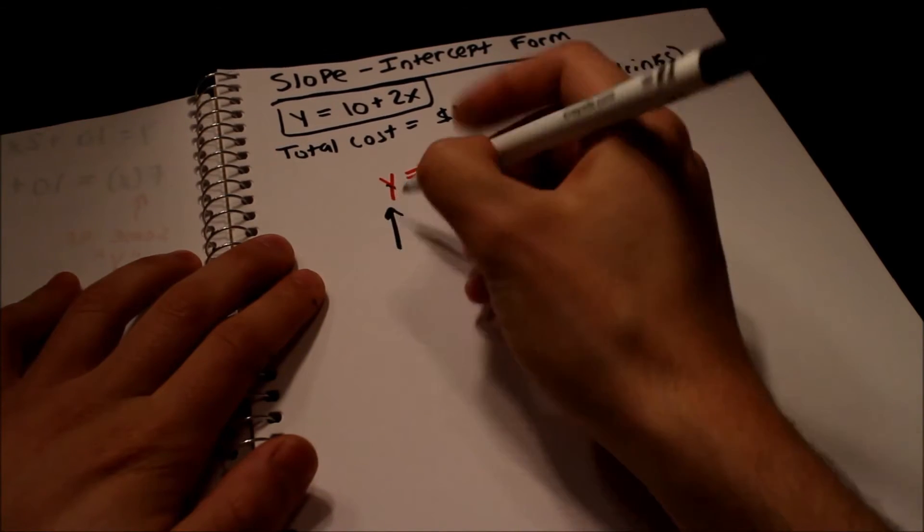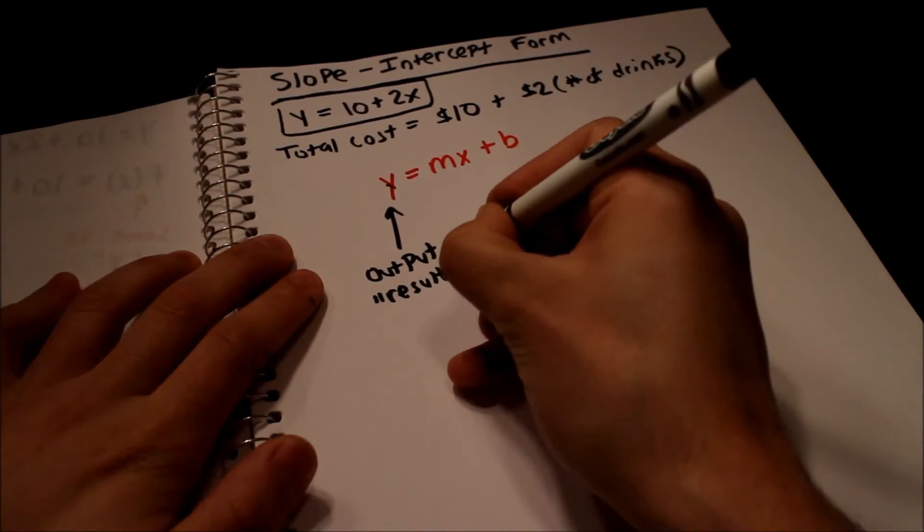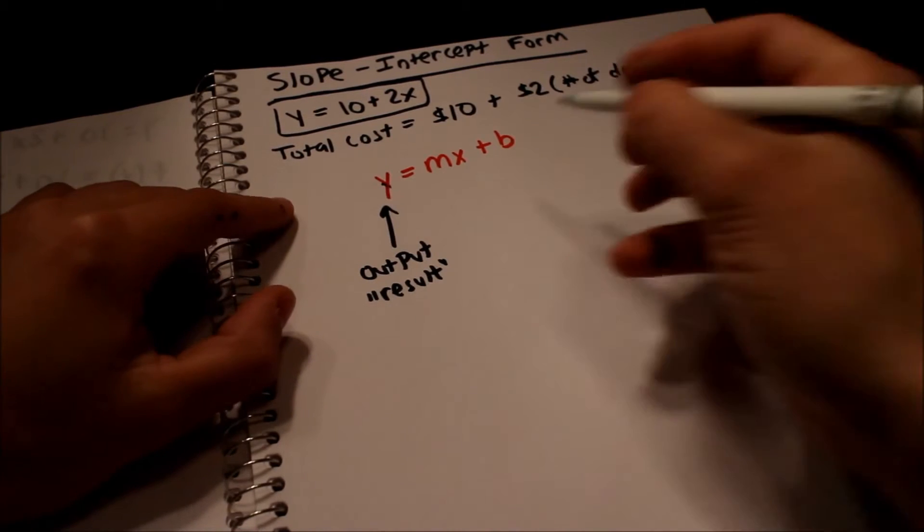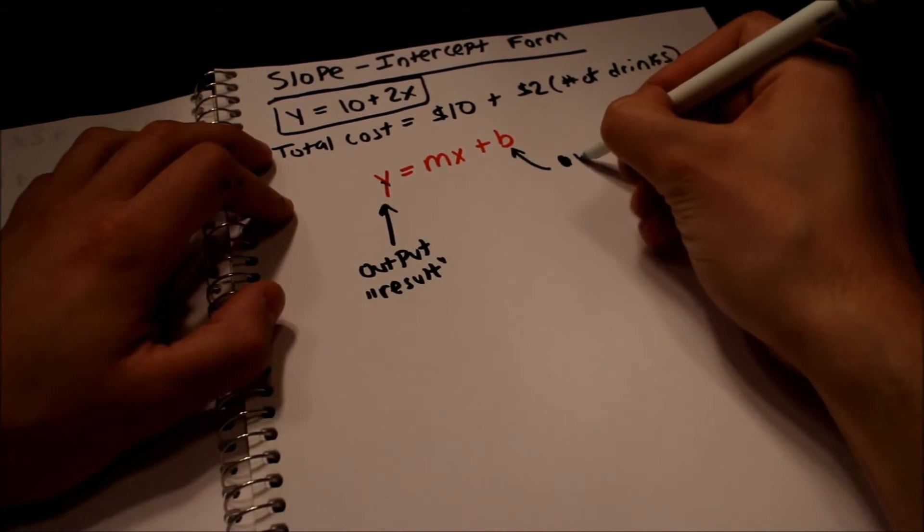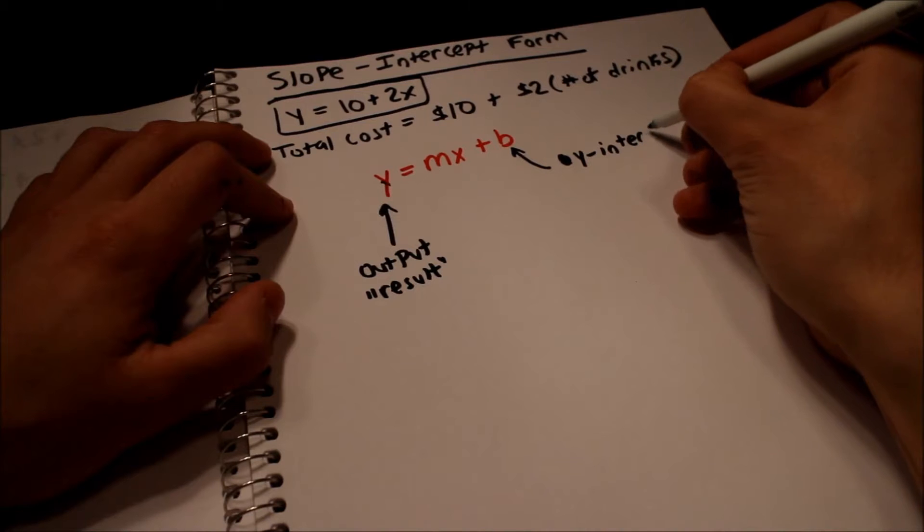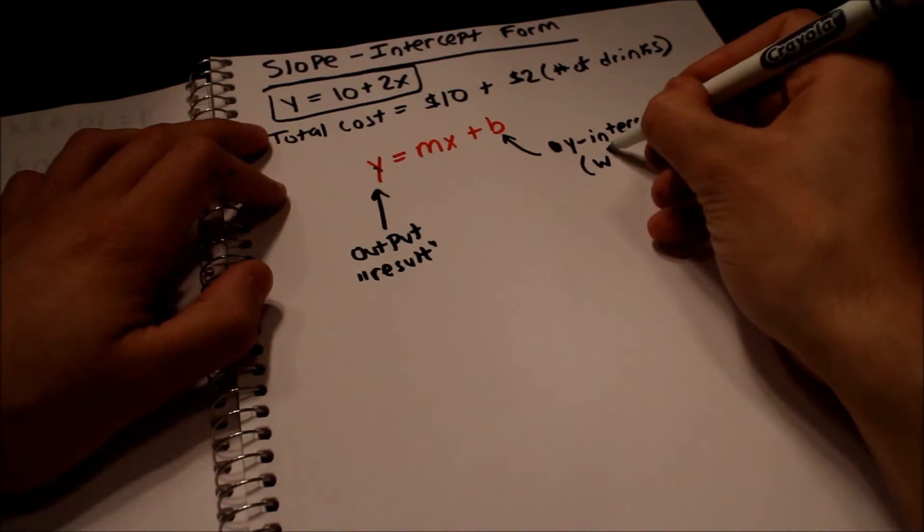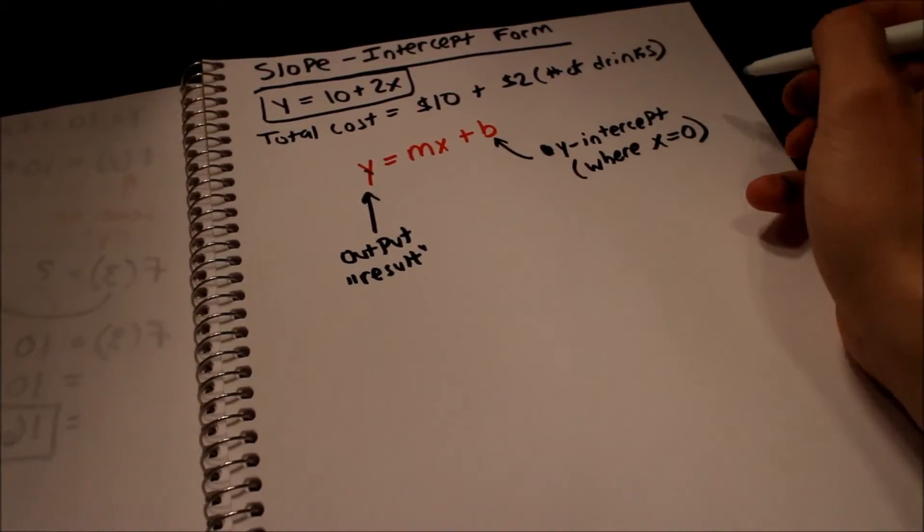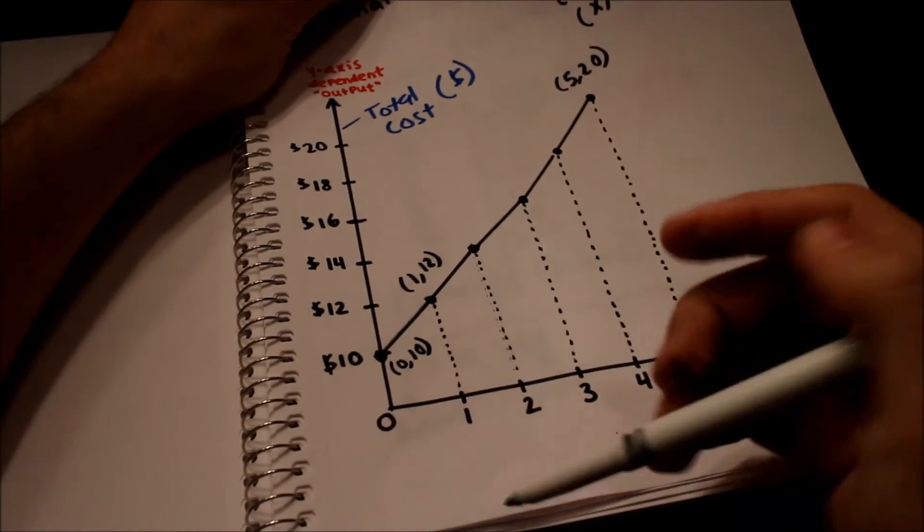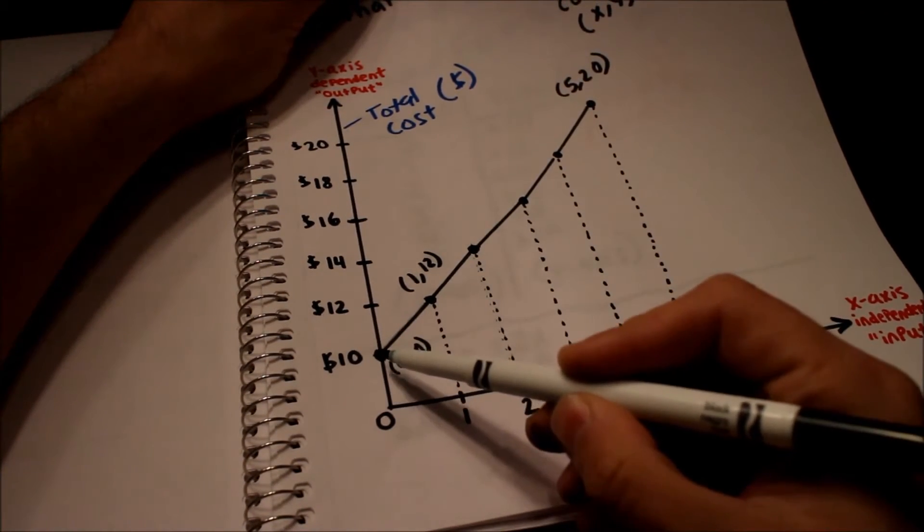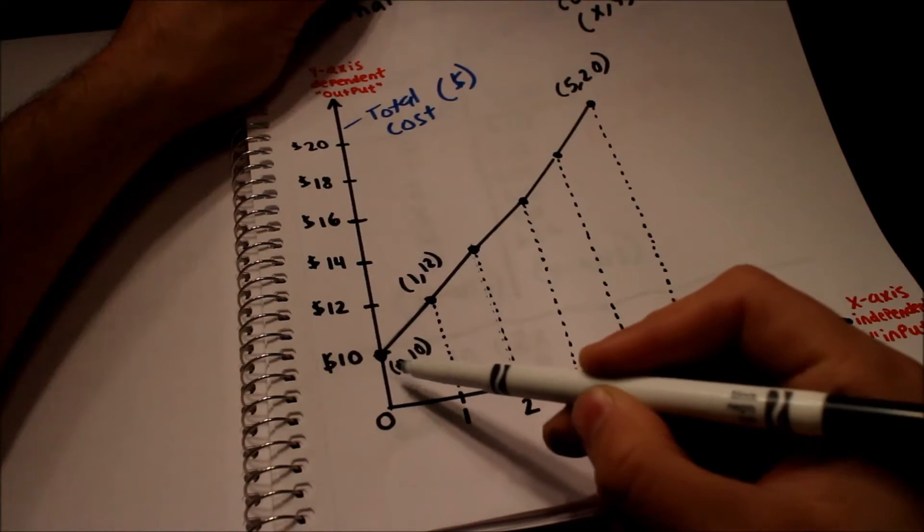So let's go ahead and write what all these different things mean. So y, this is our output or our result. And in this example it's the total cost. So b, this is our y-intercept and that's basically where x is 0 on the graph.